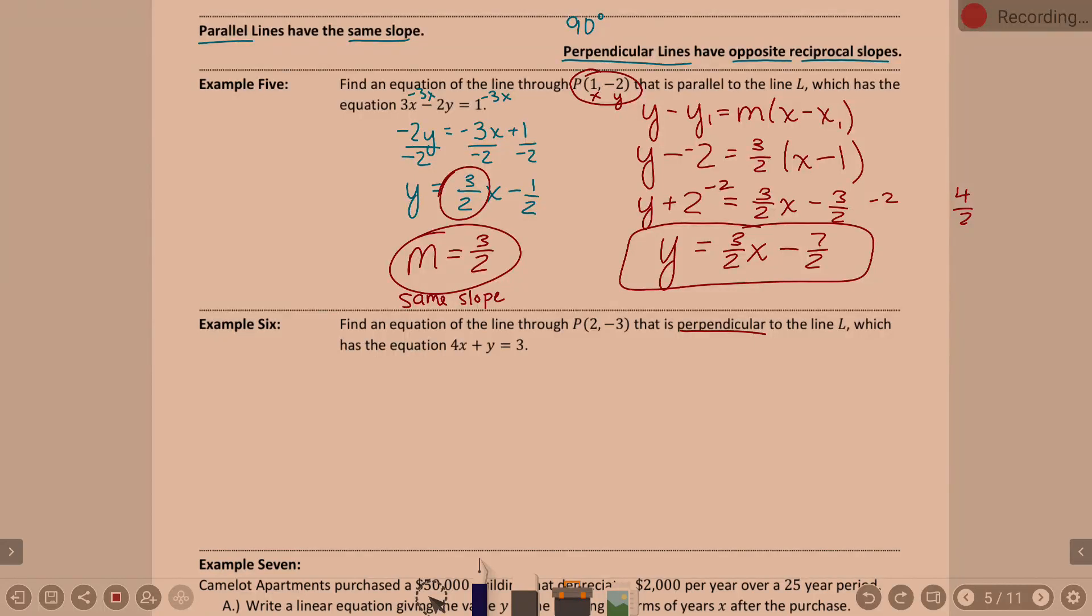In class yesterday, I did this example 5 about parallel lines. Parallel lines have the same slopes. So you find the slope of the line, and you use that same slope and that given point to write an equation.